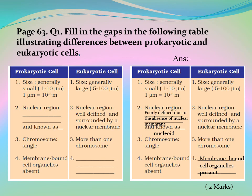Page 63, Question 1: Fill in the gaps illustrating differences between prokaryotic and eukaryotic cells. Prokaryotic cell size is generally small; eukaryotic cell size is generally large. In prokaryotic cells, the nuclear region is poorly defined due to the absence of a nuclear membrane and is known as nucleoid; in eukaryotic cells, the nuclear region is well defined and surrounded by a nuclear membrane. Prokaryotic cells have a single chromosome; eukaryotic cells have more than one chromosome. Membrane-bound cell organelles are absent in prokaryotic cells but present in eukaryotic cells.